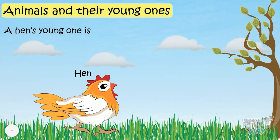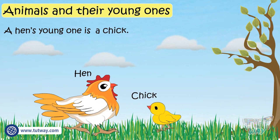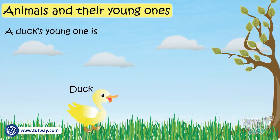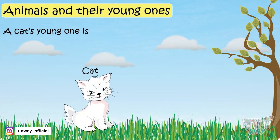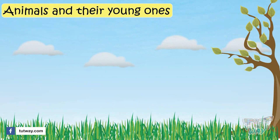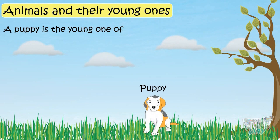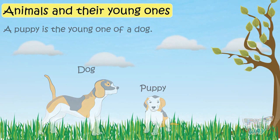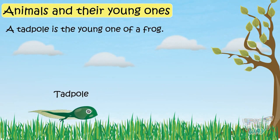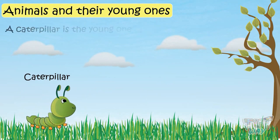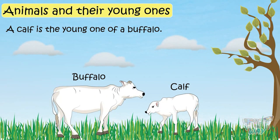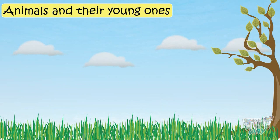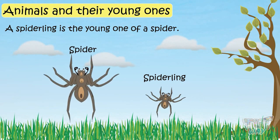A hen's young one is a chick, a duck's young one is a duckling, and a cat's young one is a kitten. A puppy is the young one of a dog, a tadpole of a frog, a caterpillar of a butterfly, a calf of a buffalo, and a spiderling of a spider.